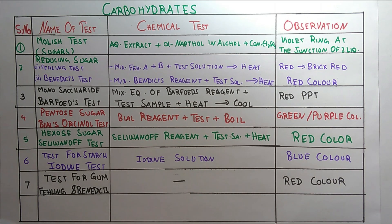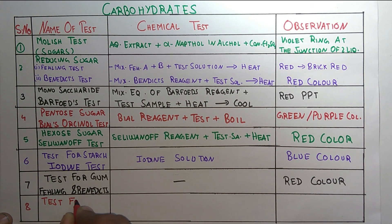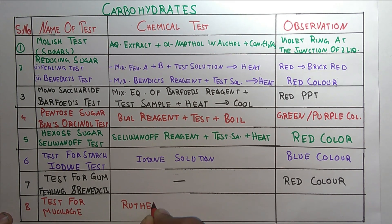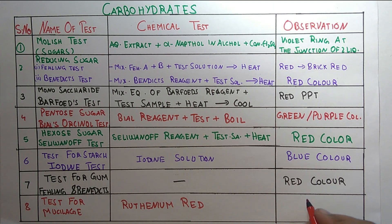The last carbohydrate test is the test for mucilage. In this, we use ruthenium red reagent. The observation is that a red color is produced.